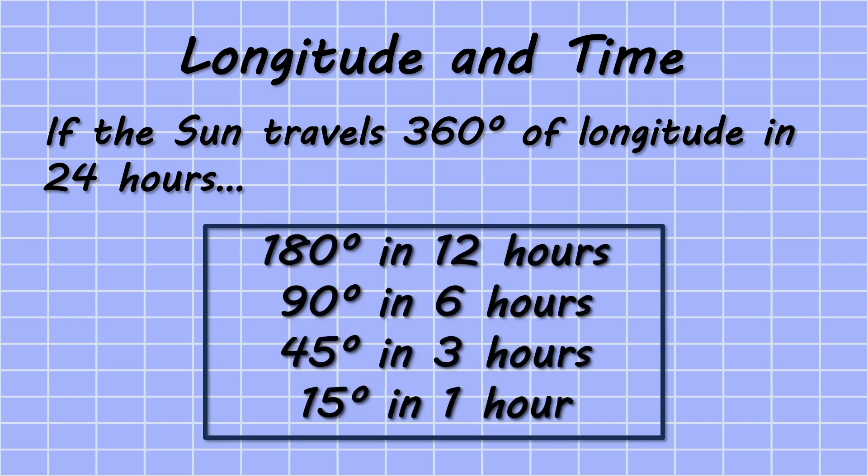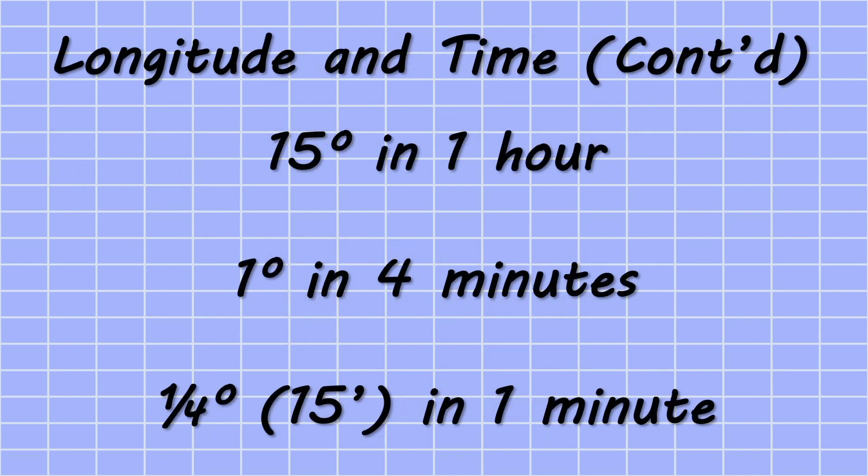For example, we can say that it would travel 180 degrees in 12 hours, 90 degrees in 6 hours, all the way down until we can say that the Sun will move 15 degrees of longitude in one hour.